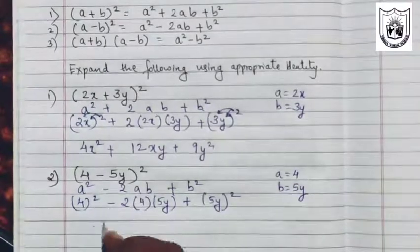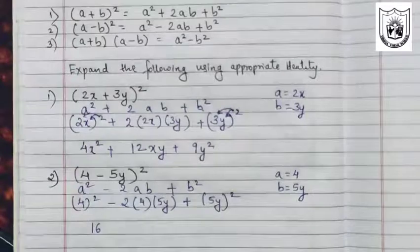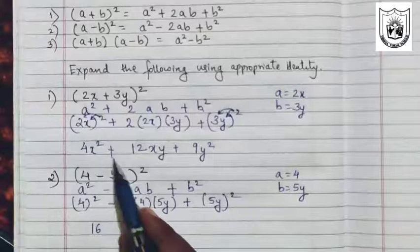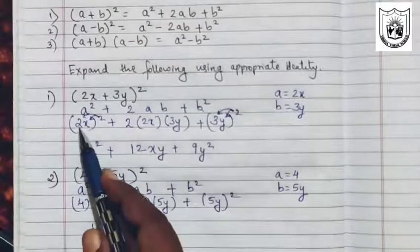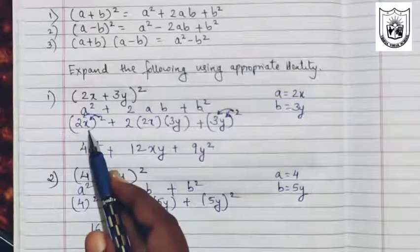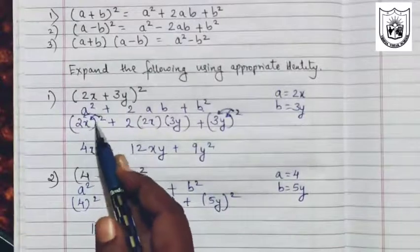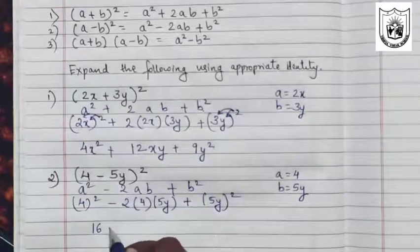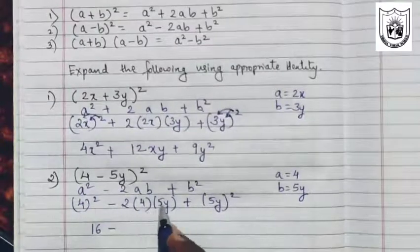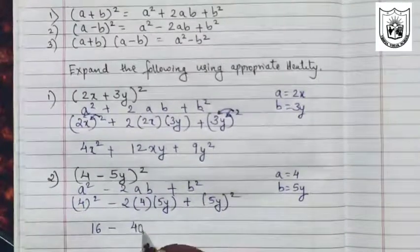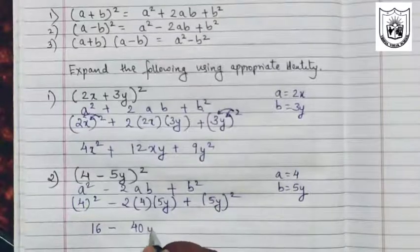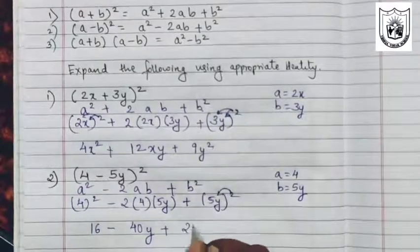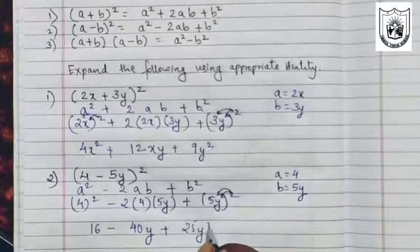So 4 square is 16. Remember students, it will be only 16 here. Many times children get confused and they put square here. We had got square there because we had a combination of a number and a variable. So 2 square was 4 and x square became x square. So 4 square is here only 16, not 16 square. 2 fours are 8, 8 fives are 40 and the variable here is only y. 5 square is 25, y square is y square.